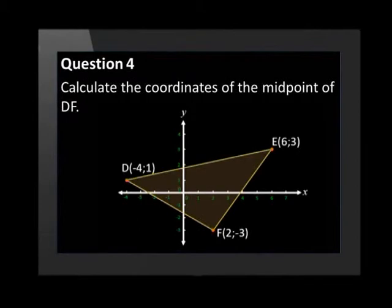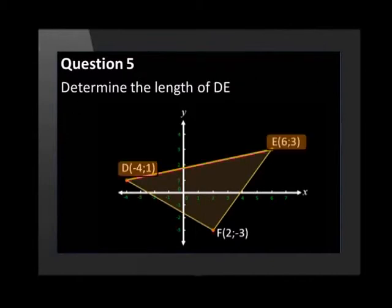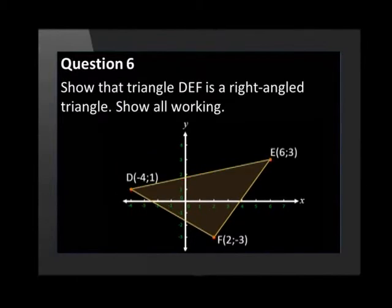You are given the vertices of triangle DEF with point D at (-4, 1), point E at (6, 3), and point F at (2, -3). Calculate the coordinates of the midpoint of DF. Determine the length of DE. Show that triangle DEF is a right angled triangle. Show all working.